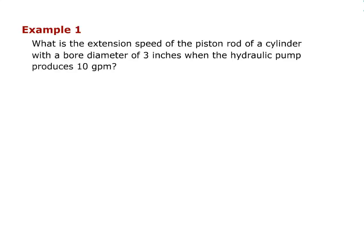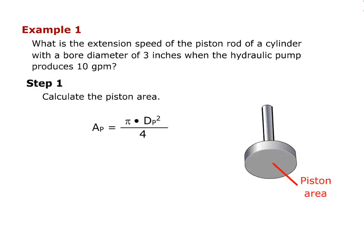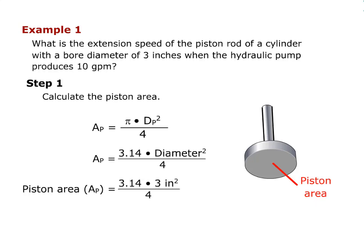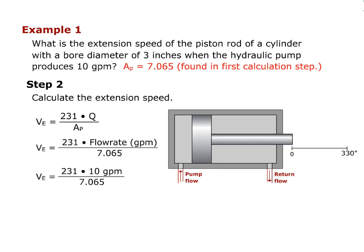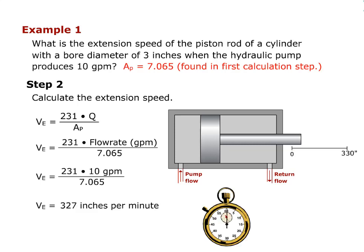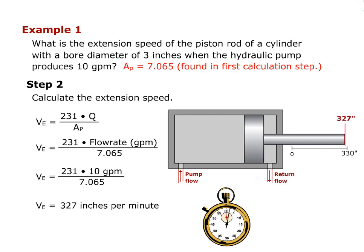What is the extension speed of the piston rod of a cylinder with a bore diameter of 3 inches when the hydraulic pump produces 10 gallons per minute? Step 1: Calculate the piston area as shown here. The piston area is 7.065 inches squared. Step 2: Calculate the extension speed as shown here. The extension speed is 327 inches per minute.